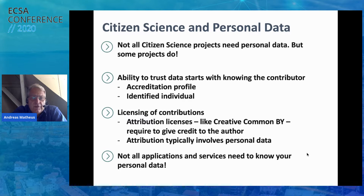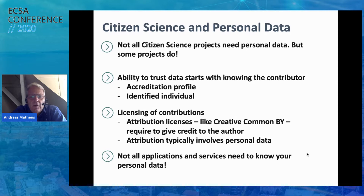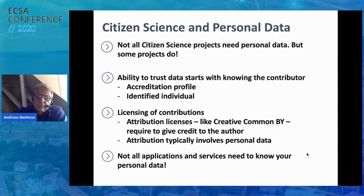Often people contribute to citizen science because they want to get known. So Alice contributes to frog data and Joe creates something about hazards to birds — they want to be known. They may choose an attribution license like Creative Commons BY. Now if you want to reuse their contributions, this requires proper attribution of the author, which involves personal data. Still, you need to consider that there are applications that really don't need personal data — for example, a geofencing service that just intersects geometries.